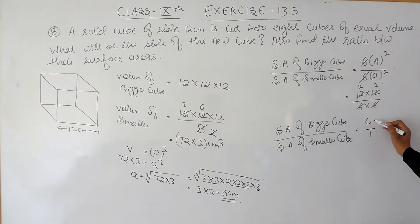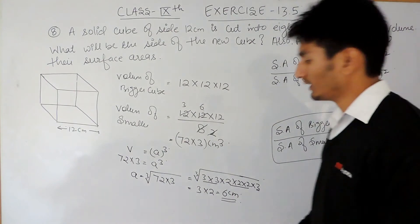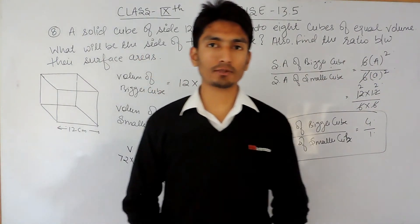Because 2 multiplied by 2 is 4, and the denominator is 1. So the ratio between these two cubes should be 4 is to 1. So this is how you can solve this particular one.